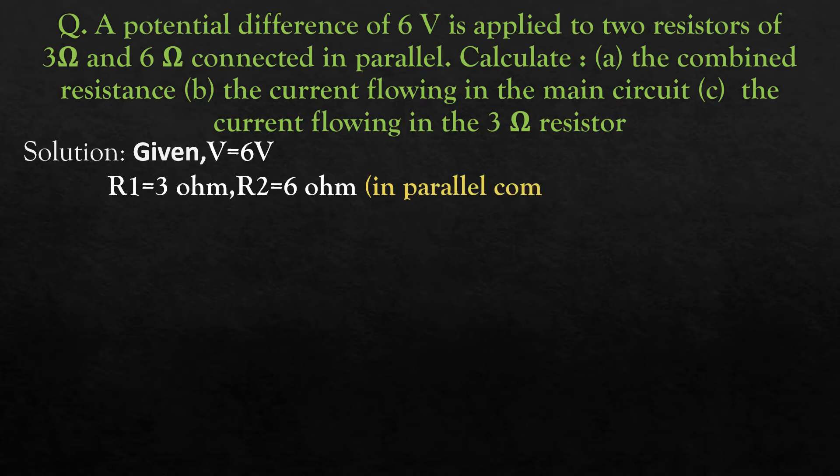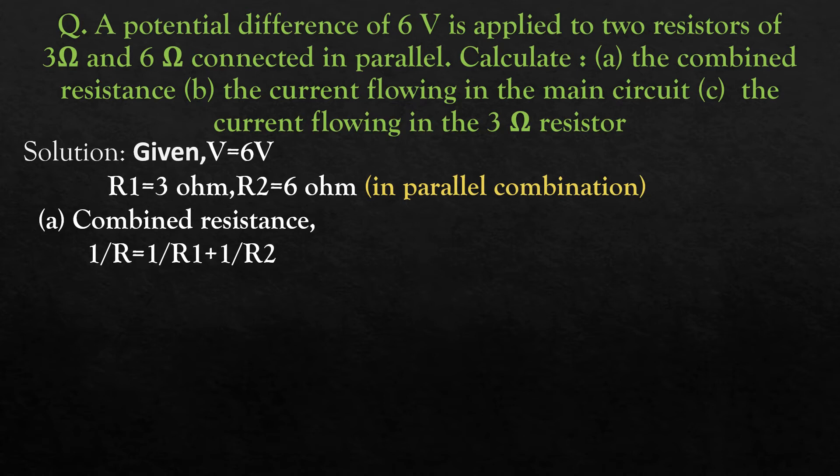For combined resistance in parallel combination, 1/R = 1/R1 + 1/R2. We have R1 = 3 ohm and R2 = 6 ohm, so 1/R = 1/3 + 1/6.